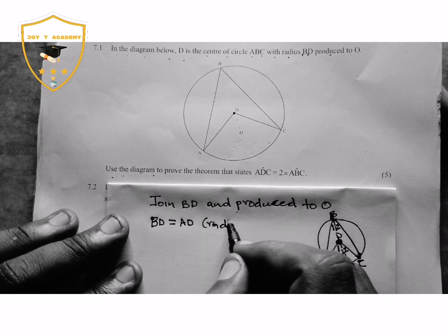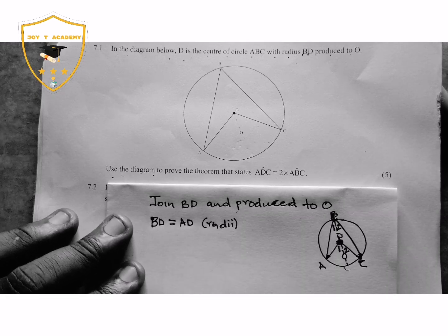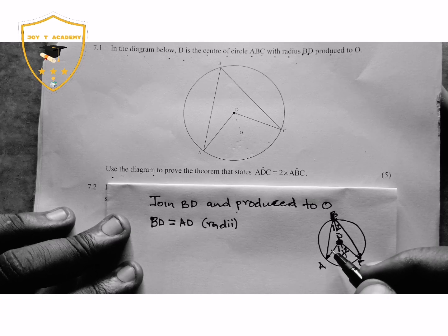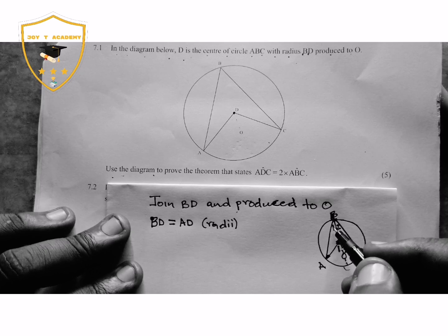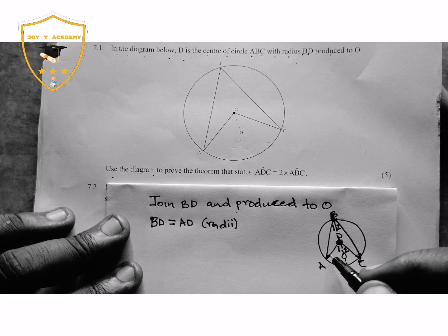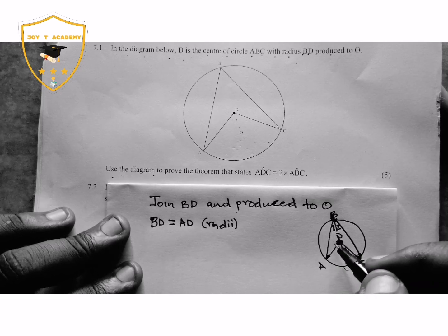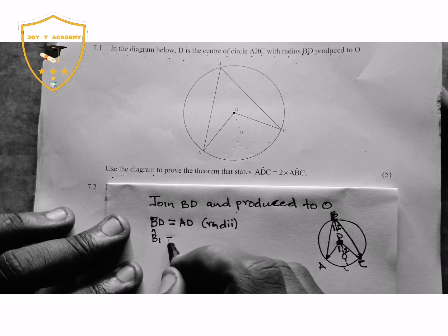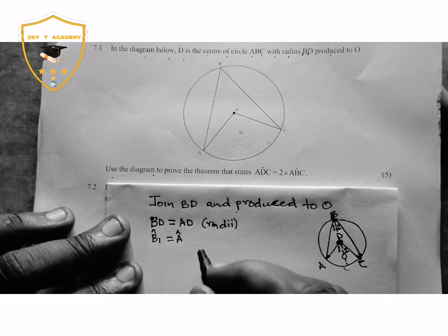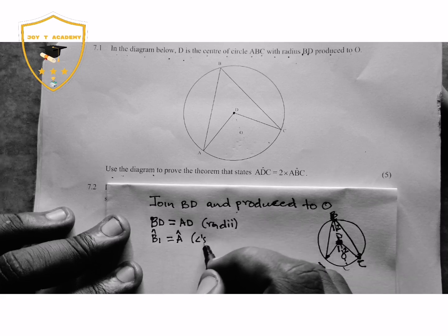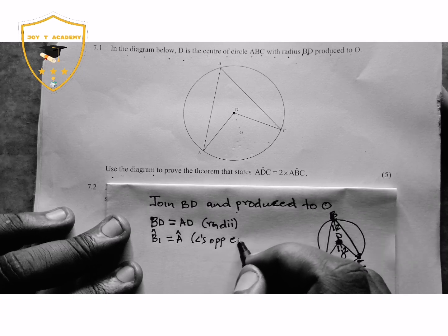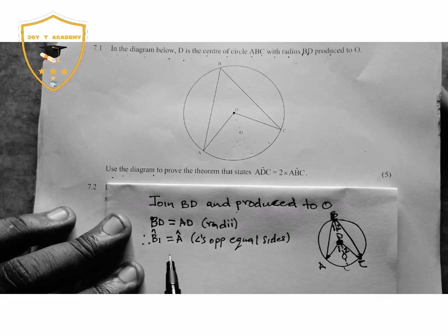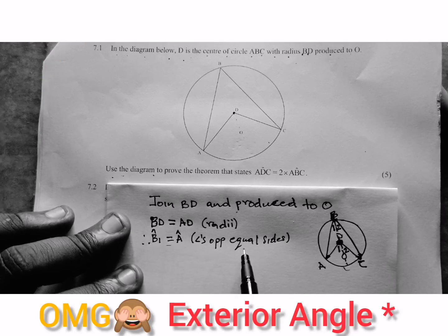We have created two triangles: triangle DB1A and triangle DB2C. Since BD equals AD (both radii), we can state BD equals AD. We know that if a triangle has two equal sides, the base angles — or angles opposite those equal sides — are also equal, which means angle B1 equals angle A.